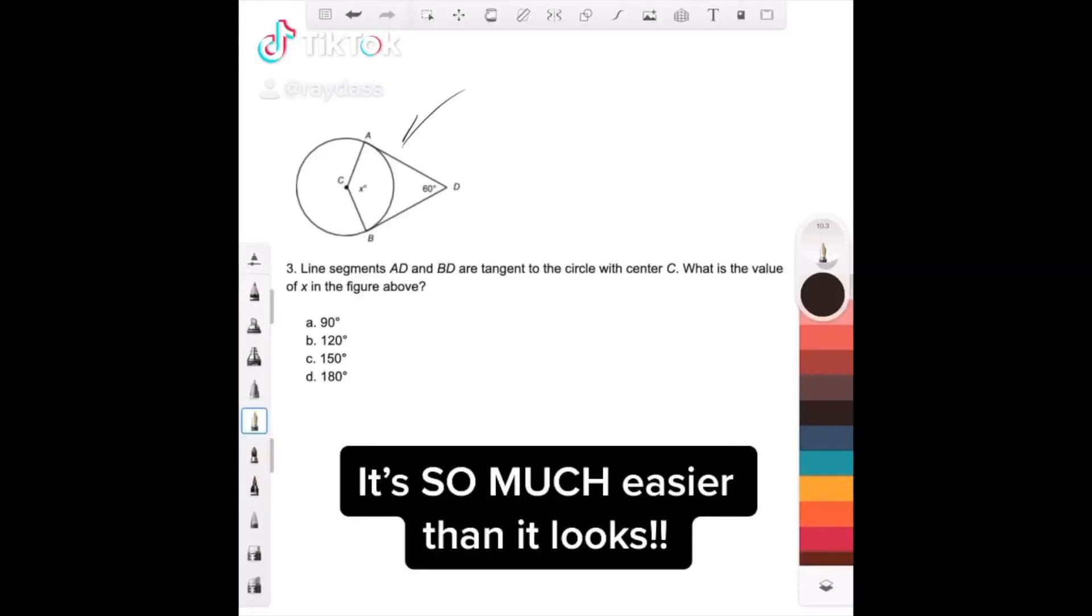This one, because this diagram looks so insane and the wording here is a little nuts, but we're gonna make it easier. Okay, so AD and BD are tangent to the circle. Now hold on, here's all that means.